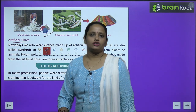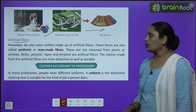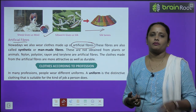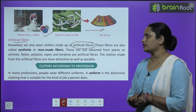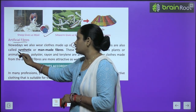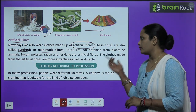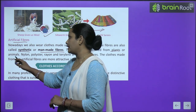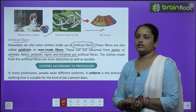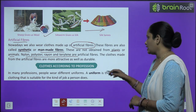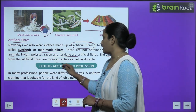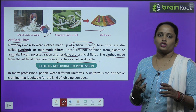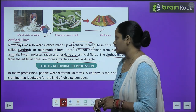Next comes artificial fiber. Nowadays we all wear clothes made up of artificial fibers. These fibers are also called synthetic or man-made fibers — ye plants aur animals se nahi milte. Nylon, polyester, rayon, and terylene are artificial fibers. The clothes made from artificial fibers are more attractive as well as durable — zyada sundar dikhte hain aur zyada samay tak chalte hain.